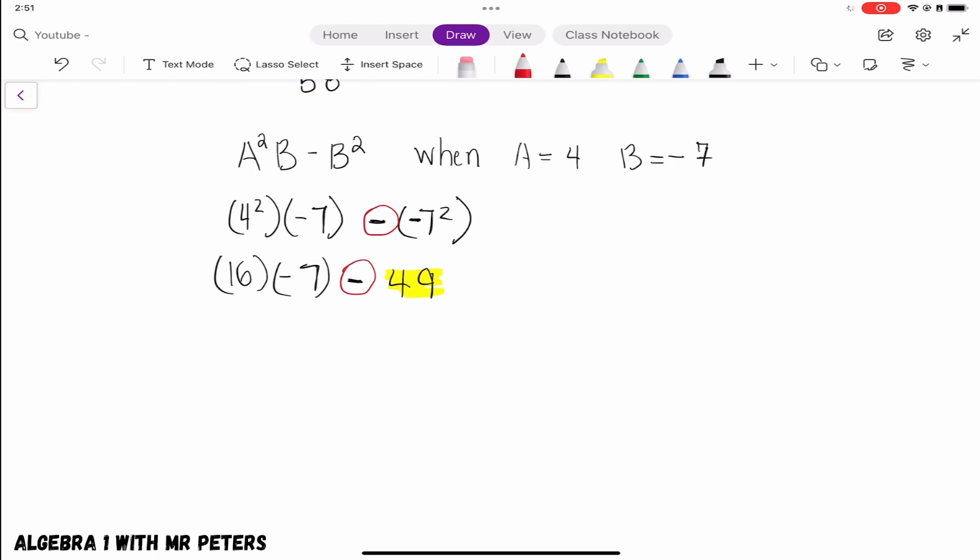However, we still have to pay attention to that subtraction sign out in front. So even though our 49 is positive, we're still going to be subtracting it from 16 times negative 7. So when we go back and we are following order of operations like we said before, we're going to multiply and we're going to get negative 112.